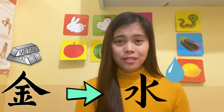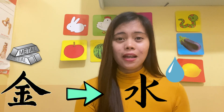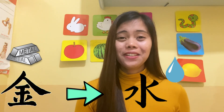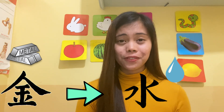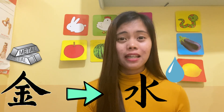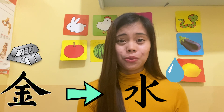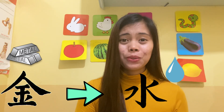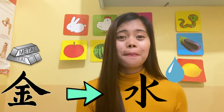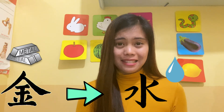Jin shang Shui — Metal produces water. When metal gets cold, it undergoes the process of condensation, thus producing water. Metal produces water by means of condensation.